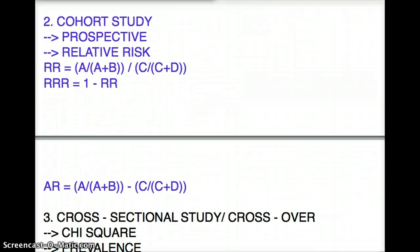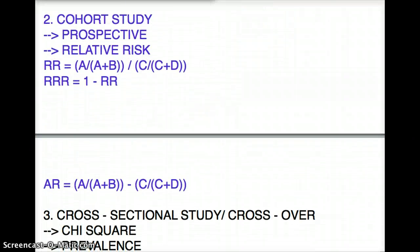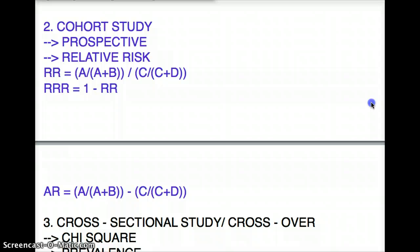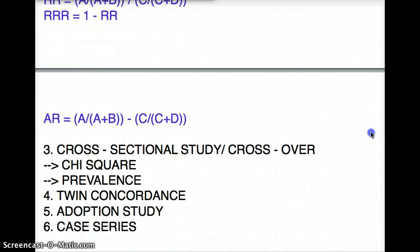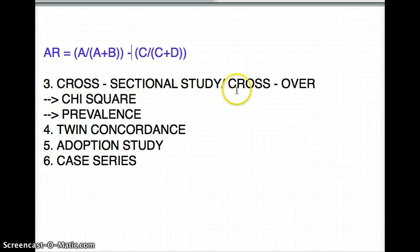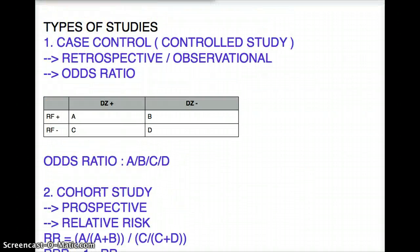This is followed by cohort study. There are a lot of similarities between case control and cohort study, and that's why I color-coded them. Followed by cross-sectional study, also called cross-over study. As soon as you hear 'cross' they're talking about the same thing. Then twin concordance, adoption study, and case series study.